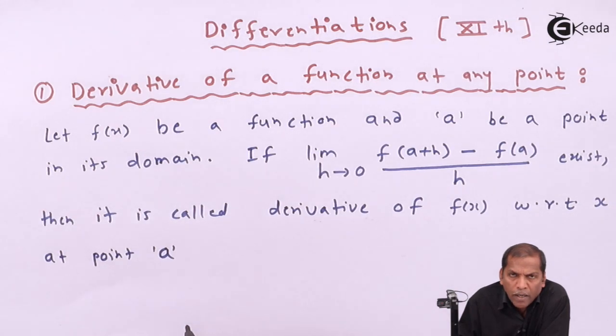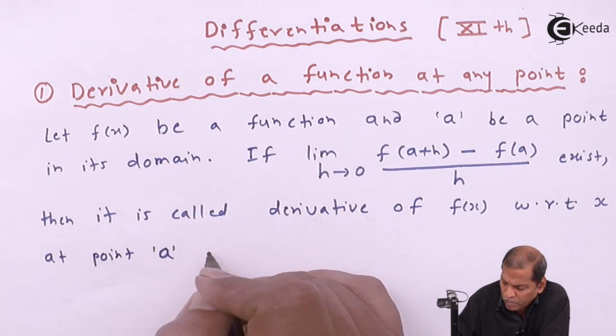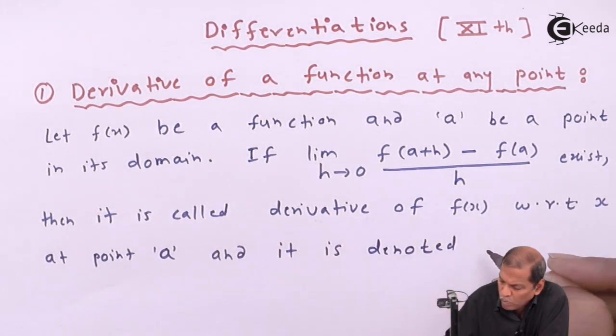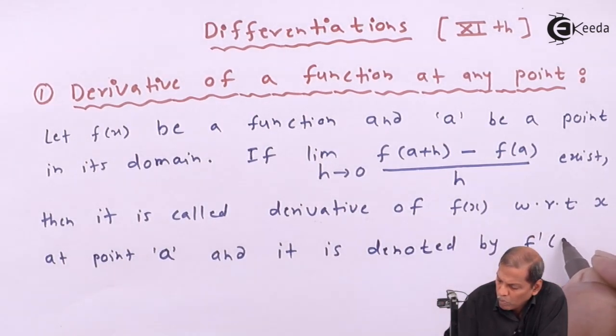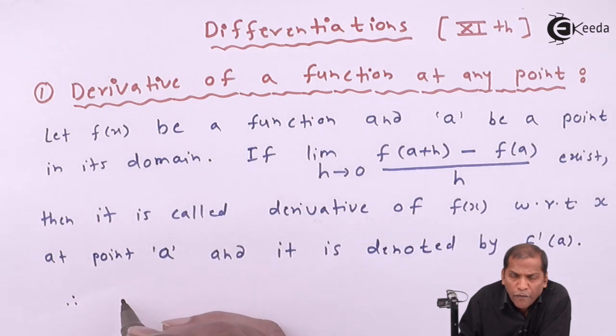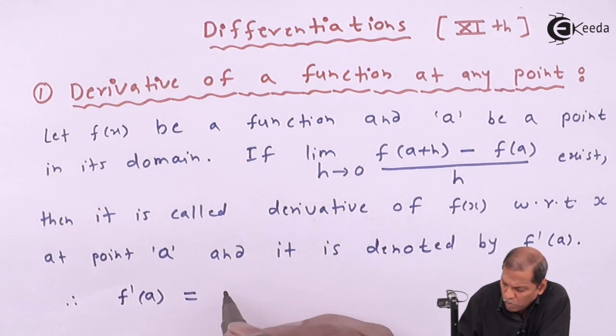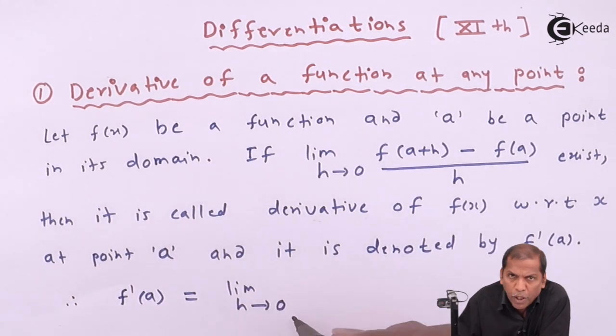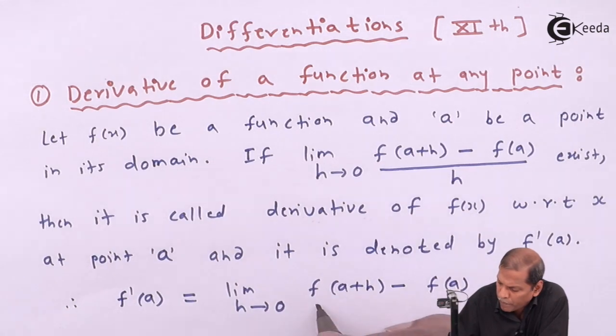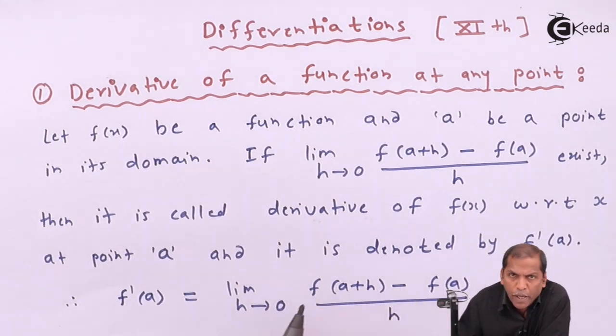and it is denoted by f'(a). Therefore, f'(a) = lim(h→0) [f(a+h) - f(a)]/h